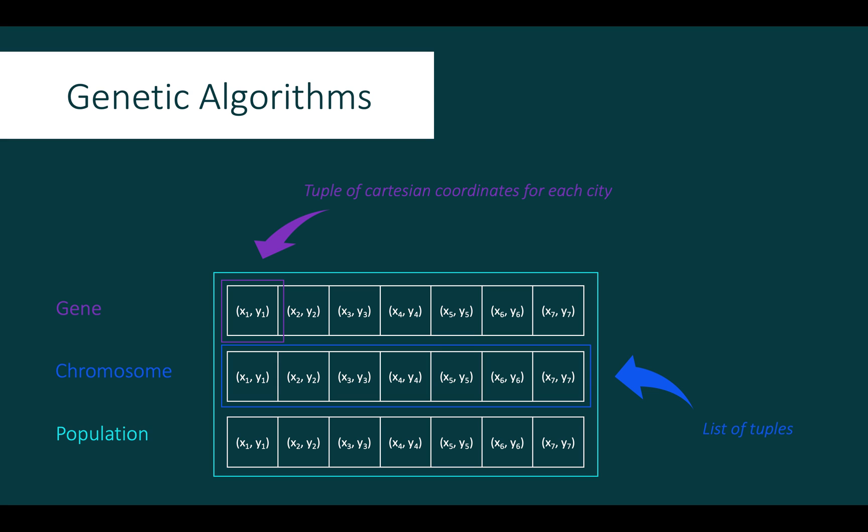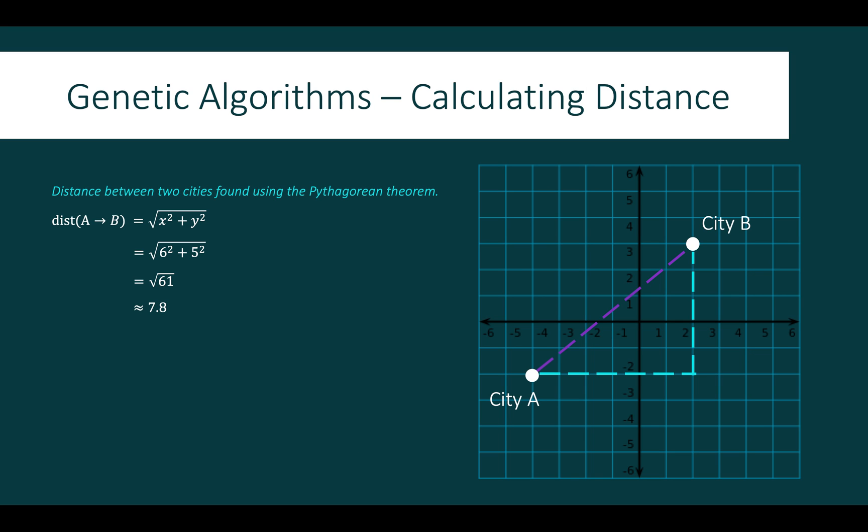In this example of the travelling salesman, each chromosome contains a list of tuples to represent the possible paths taken by the salesman to the cities, with the tuples being X and Y coordinates on a Cartesian plane. These tuples could also be referred to as genes and the possible solutions that are each stored in a separate chromosome can be grouped together and be called a population. The fitness test that will be applied to this population will measure the distance between the tuples and try to identify which chromosome contains the shortest path, also referred to as the cost of the path.